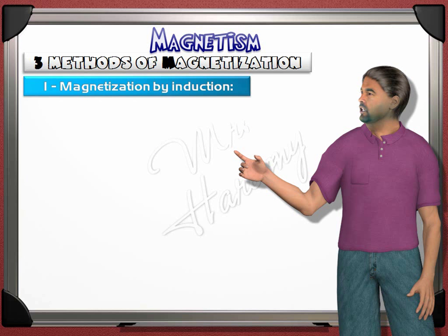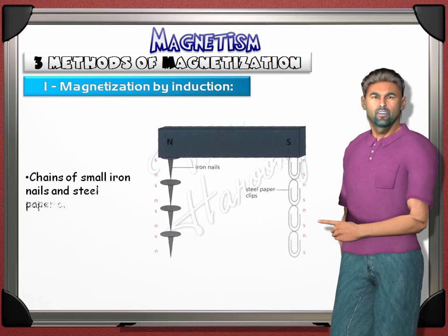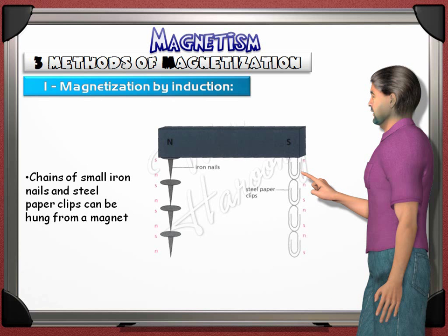Magnetization by induction: chains of small iron nails and steel paper clips can be hung from a magnet. A nail or clip is not normally a magnet. The first clip acquires the magnetic property by just touching the strong magnet, which is why it attracts the next one and so on. Acquiring the magnetic property by just touching a strong magnet is named magnetization by induction. Actually, you don't even need to touch the magnet — being within the magnetic field is enough. As you go further from the magnet, the magnetic property becomes weaker.